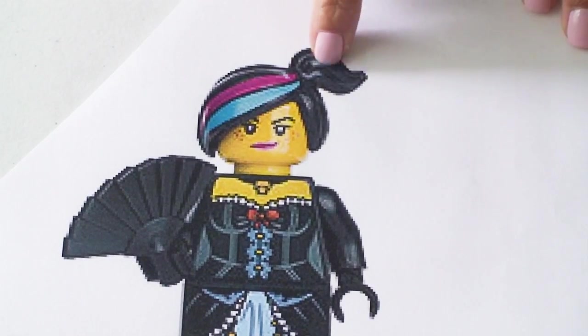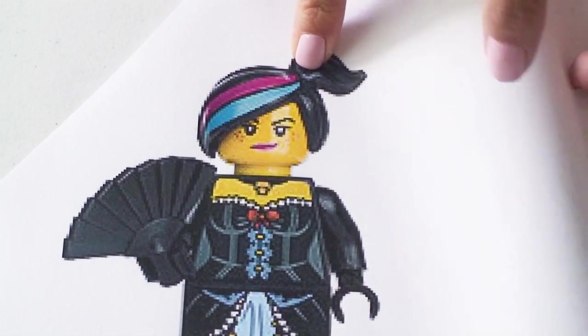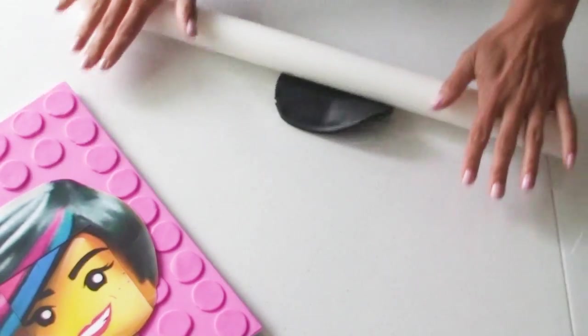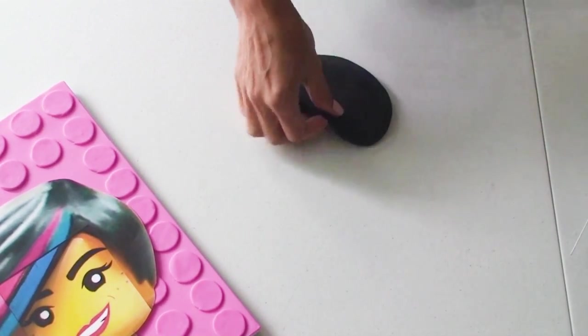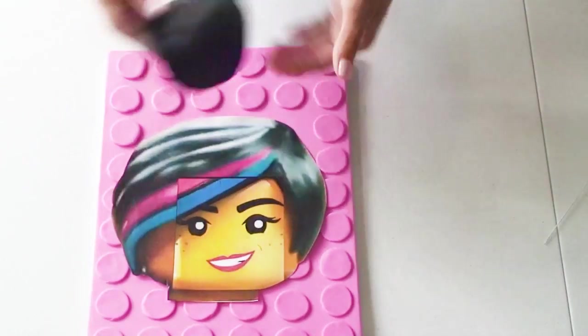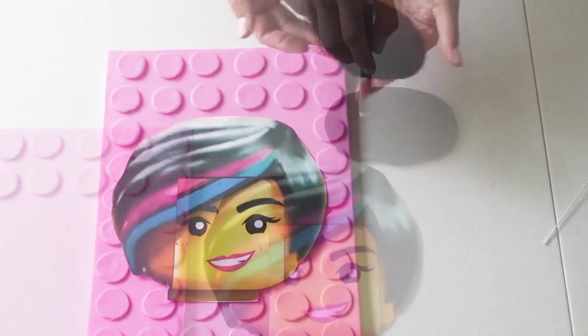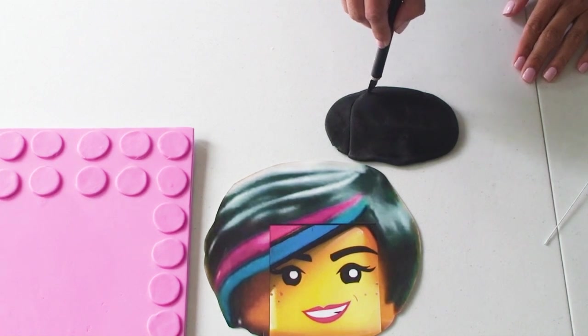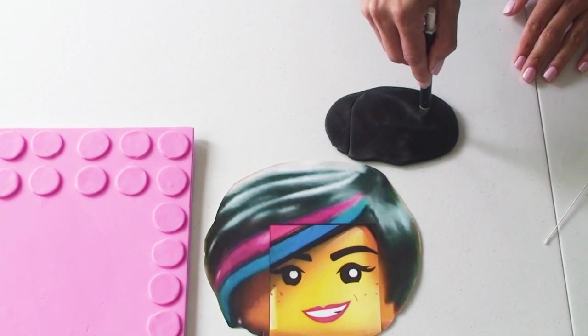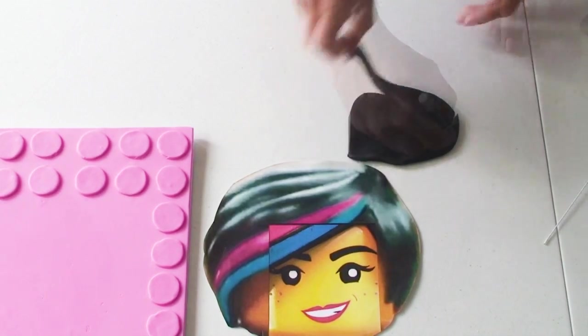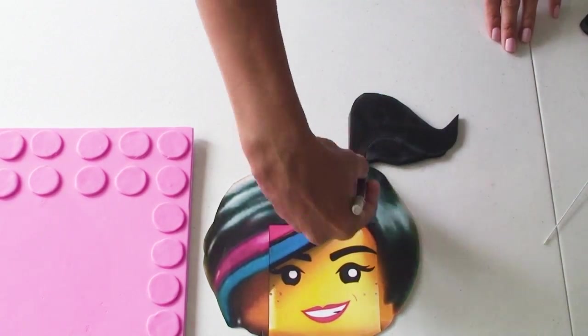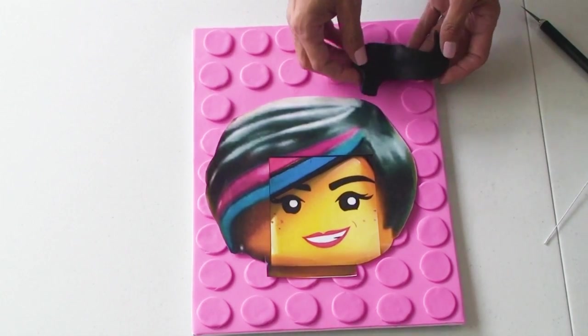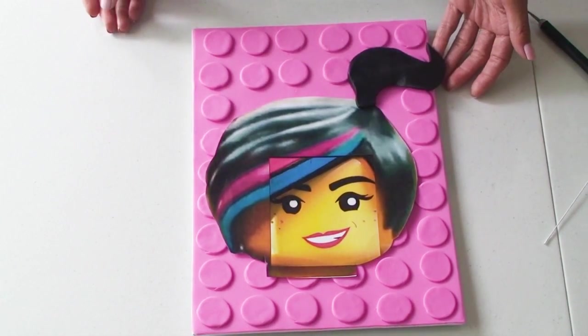Now I'm going to create Wildstyle's little ponytail. I haven't included a template for this because I'm going to leave it up to you to fit it according to the size of your board. Roll out some black fondant, leave it fairly thick about five mil so we have enough strength once we've inserted the wire, and with your exacto blade just cut out the shape of her ponytail. Look at the picture as a guide and use your template on your board to see if you're happy with the size.